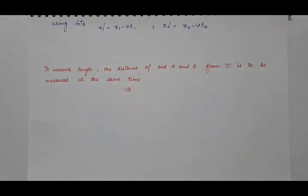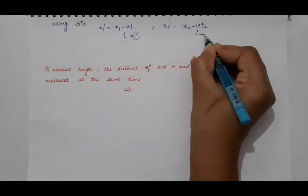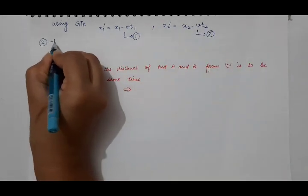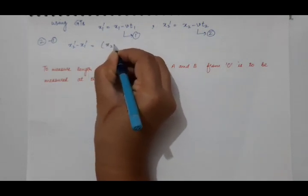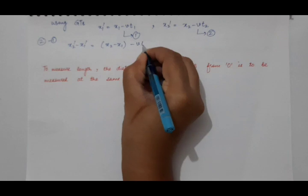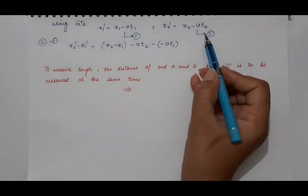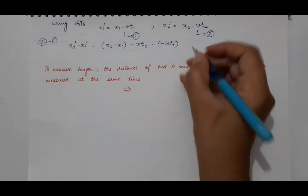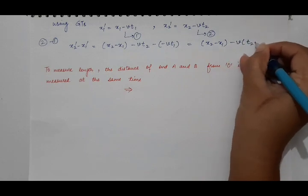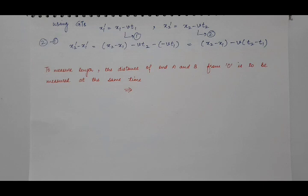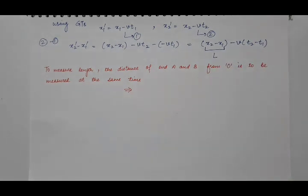We have to find the length of the rod. The length of the rod is B minus A. Subtracting equation 1 from equation 2 gives us: X2' − X1' = (X2 − VT2) − (X1 − VT1) = (X2 − X1) − V(T2 − T1), where X2 − X1 is the length of the rod in frame S.